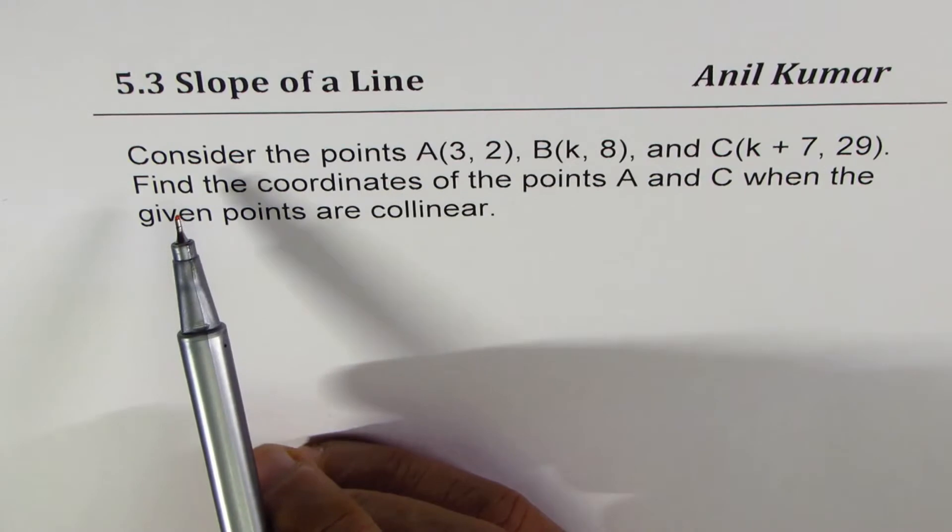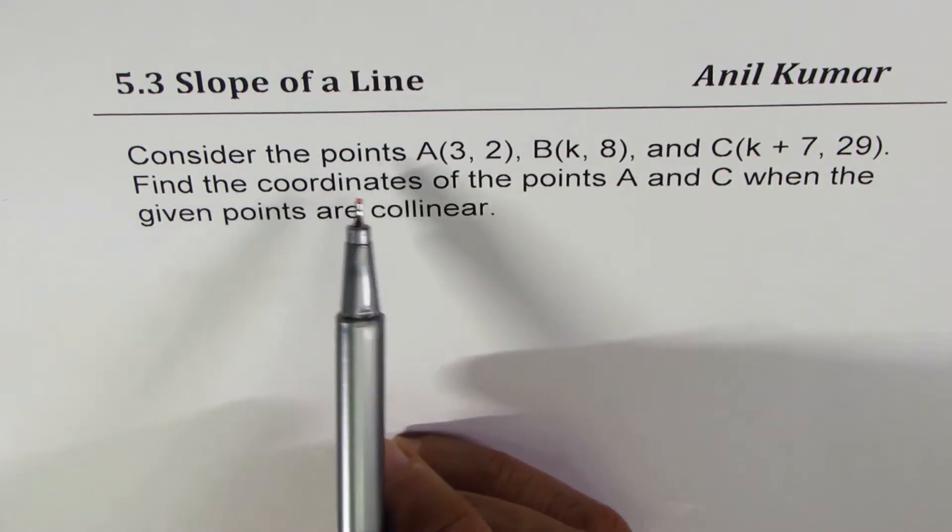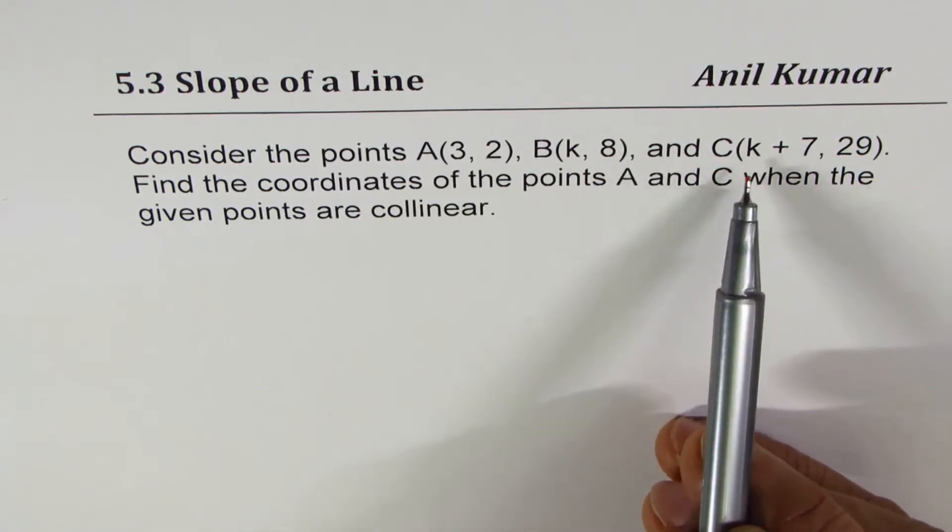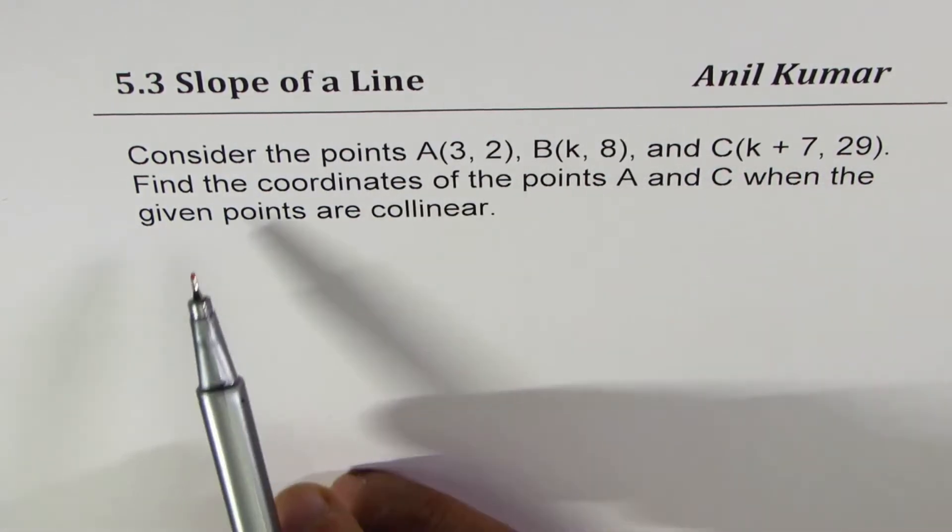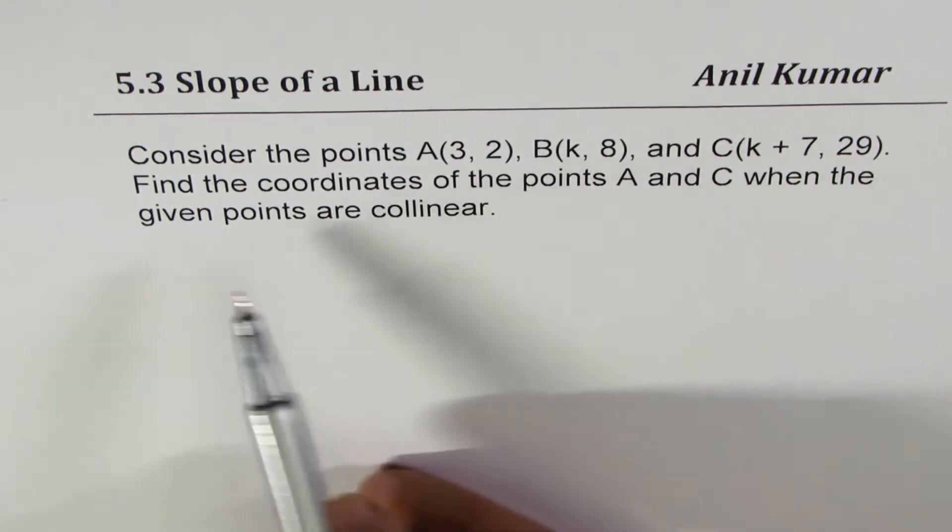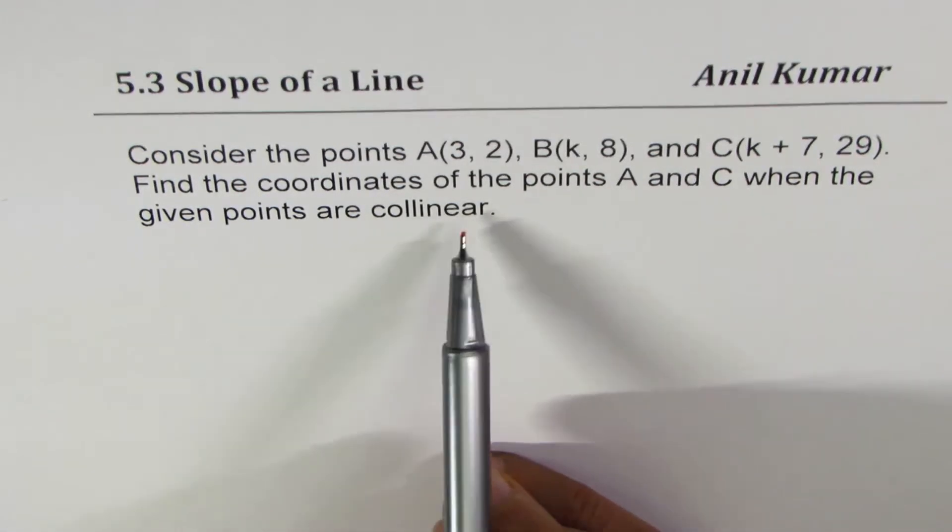The question here is, consider the points A(3, 2), B(k, 8), and C(k+7, 29). Find the coordinates of the points A and C when the given points are collinear.